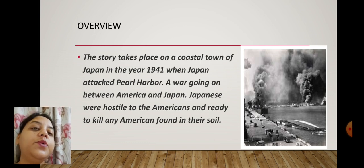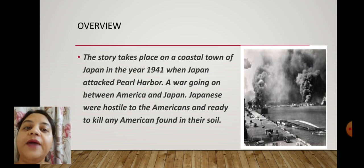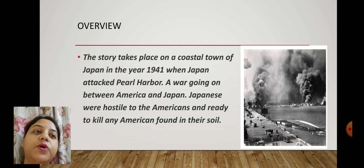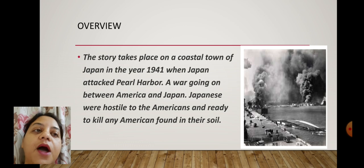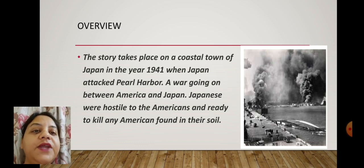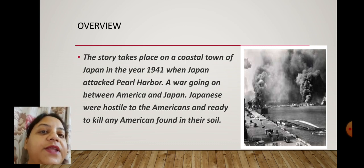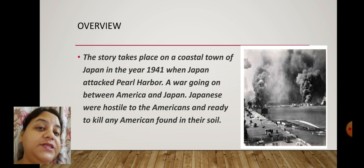In the Second World War, America and Japan were two hostile countries. Japan was on the side of Germany and Italy, and America was on the side of Britain. The story takes place on a coastal town of Japan in the year 1941, when Japan attacked Pearl Harbor. Japanese were hostile to the Americans and ready to kill any American found on their soil. This story shows how this American-Japanese hostility had instilled hatred even among common people.